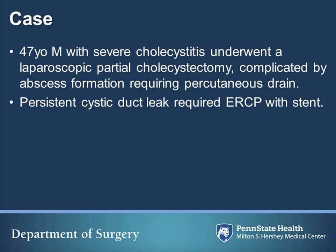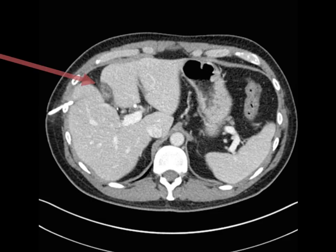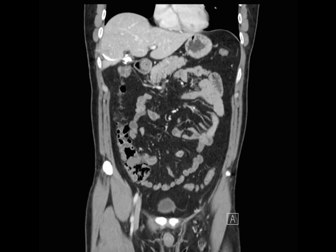The patient is a previously healthy 47-year-old male who underwent a laparoscopic subtotal cholecystectomy at a referring facility for severe cholecystitis. His postoperative course was complicated by abscess formation in the gallbladder fossa requiring a percutaneous drain. He was found to have a persistent cystic duct leak requiring ERCP with stent placement. Repeat imaging demonstrated retained stones in the remaining gallbladder and in the cystic duct.